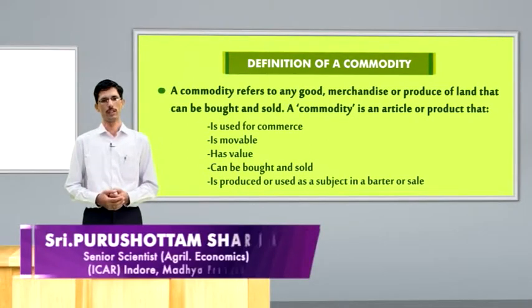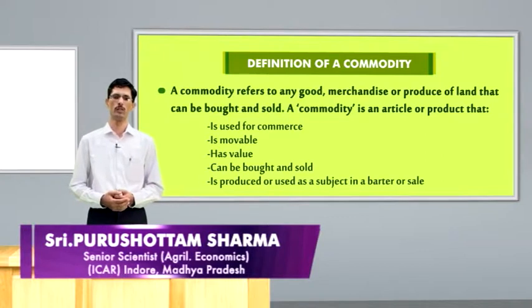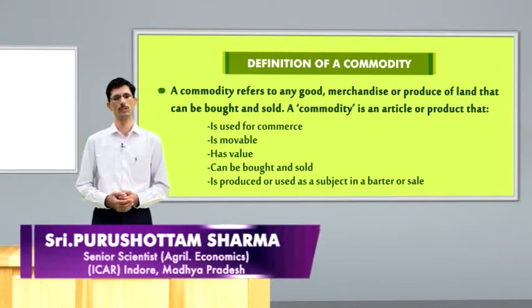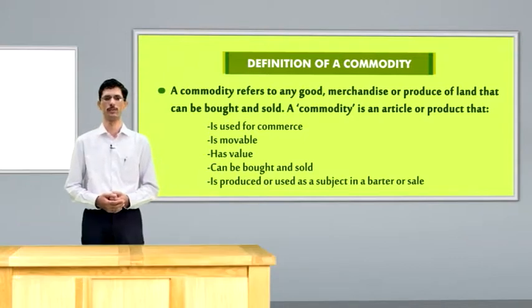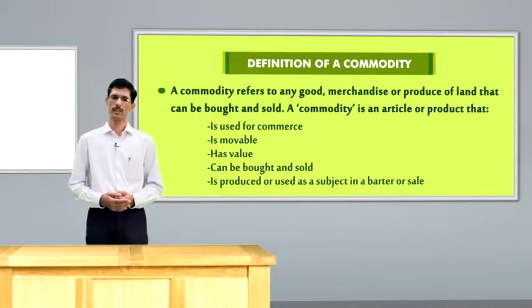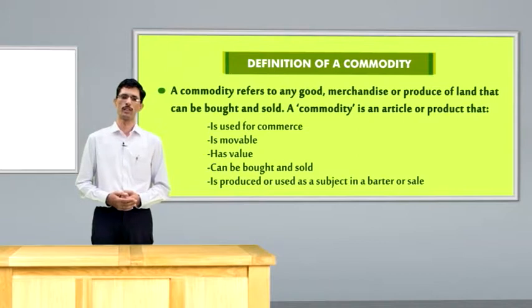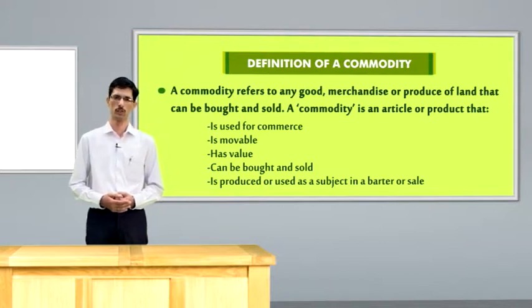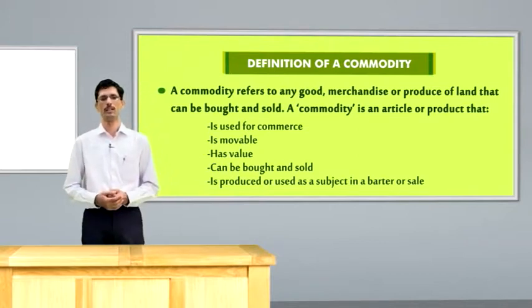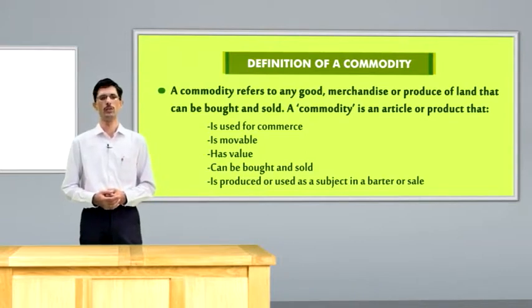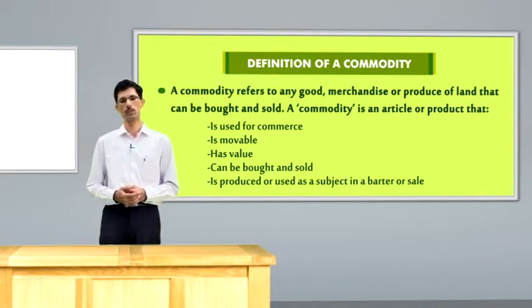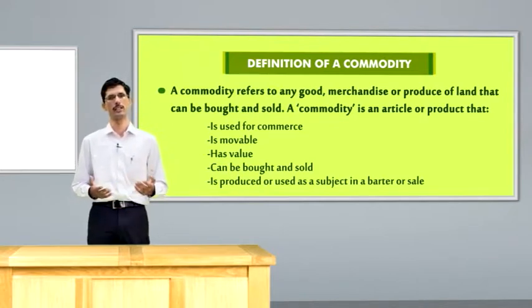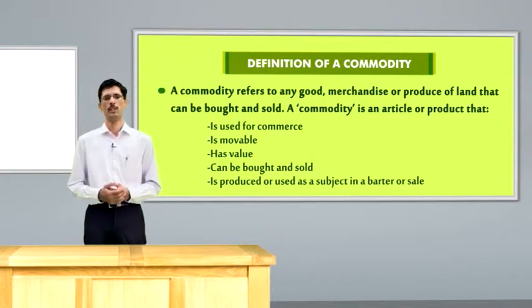A commodity is a product that has a commercial value, which can be produced, sold, bought, and consumed. A commodity is an article or product that is used for trade or commerce, that is movable, that has economic value, which can be bought and sold and is produced or used as a subject in a barter or sale.